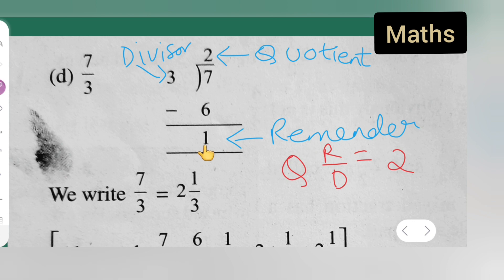So then 1 upon, remainder upon divisor is 3. So this is how you all get this into a mixed fraction. So here, 2 and 1 upon 3, okay. Now let us see the next part of it.